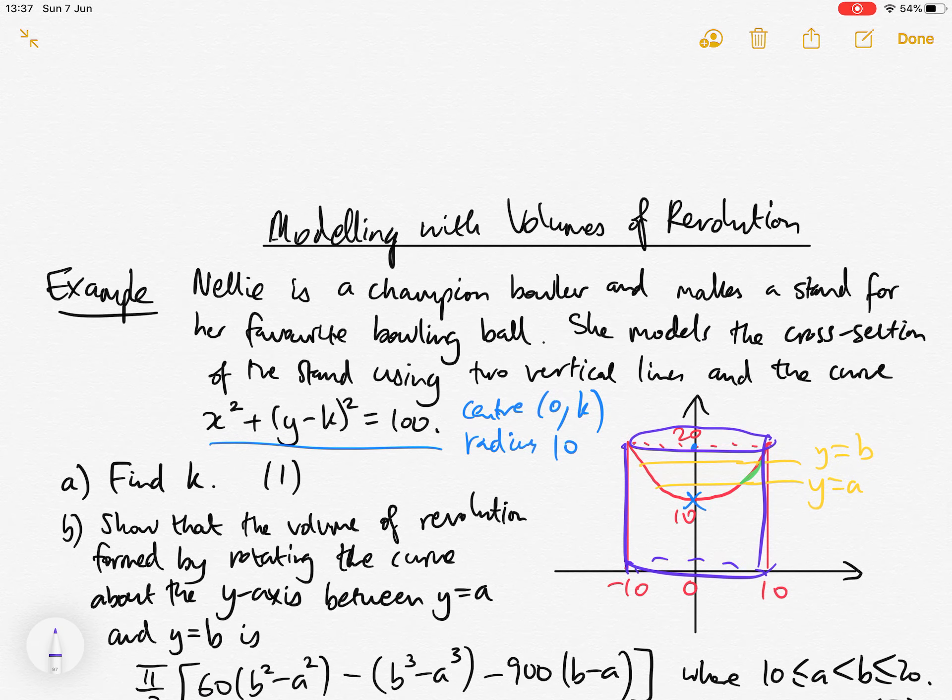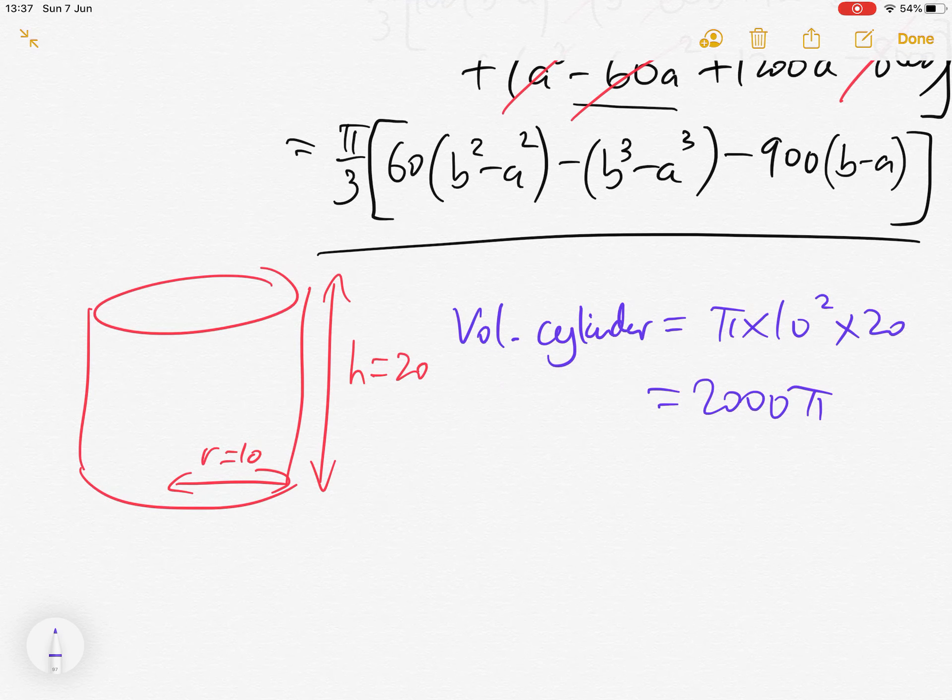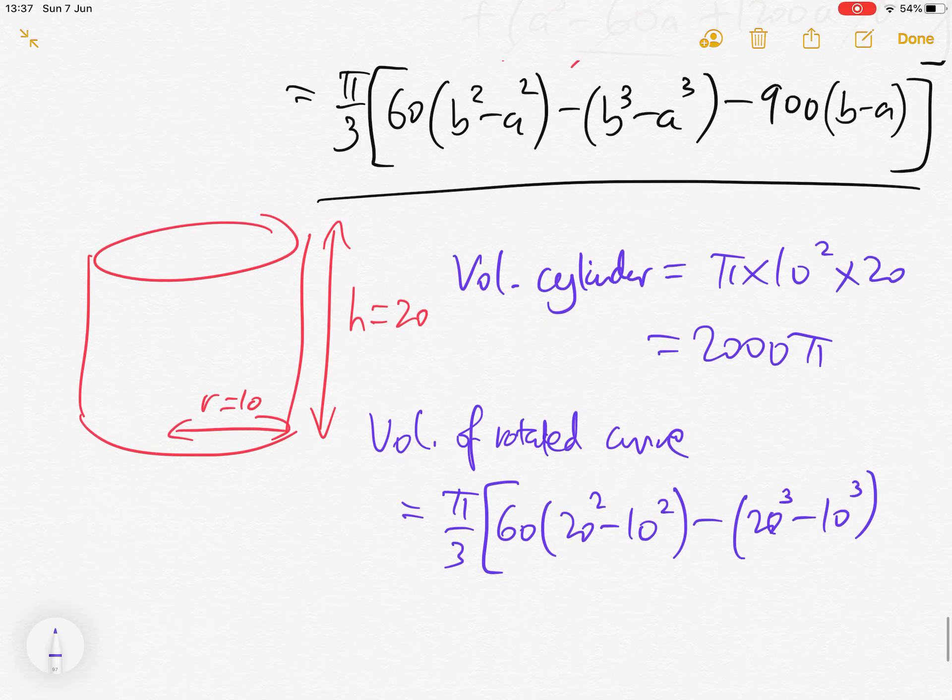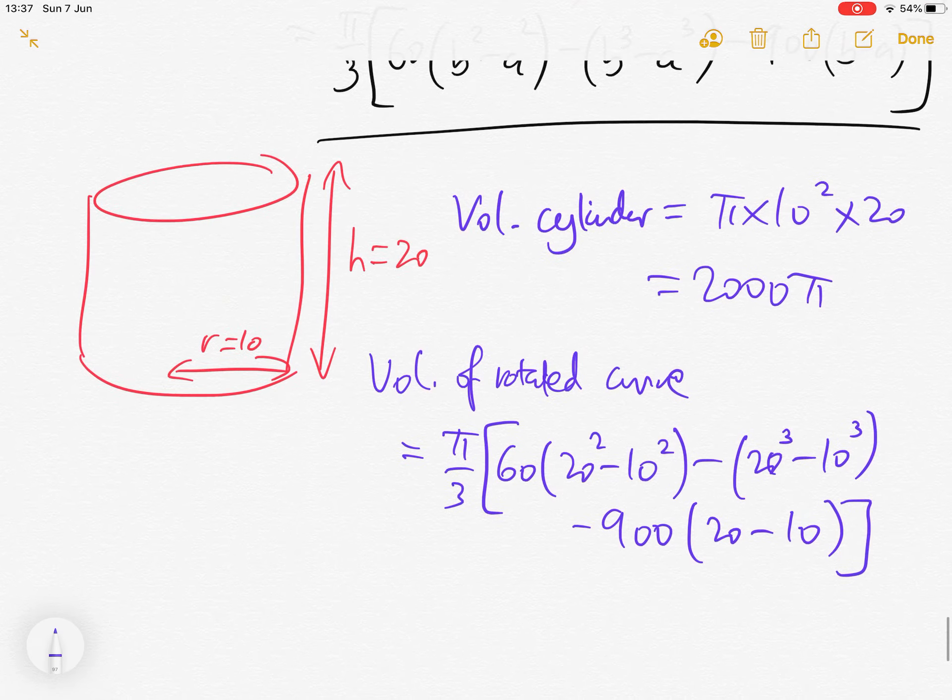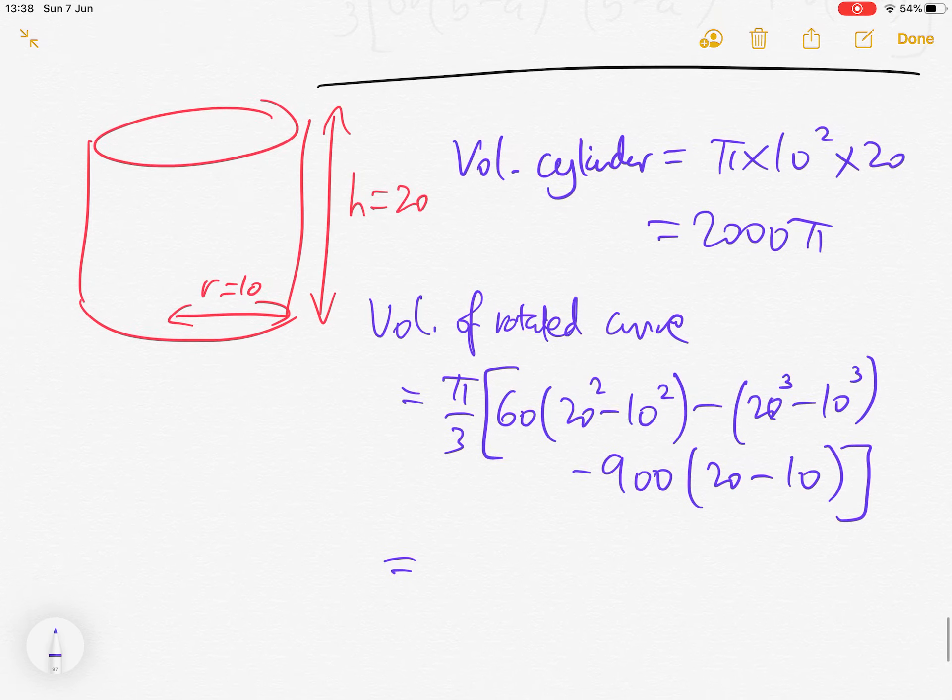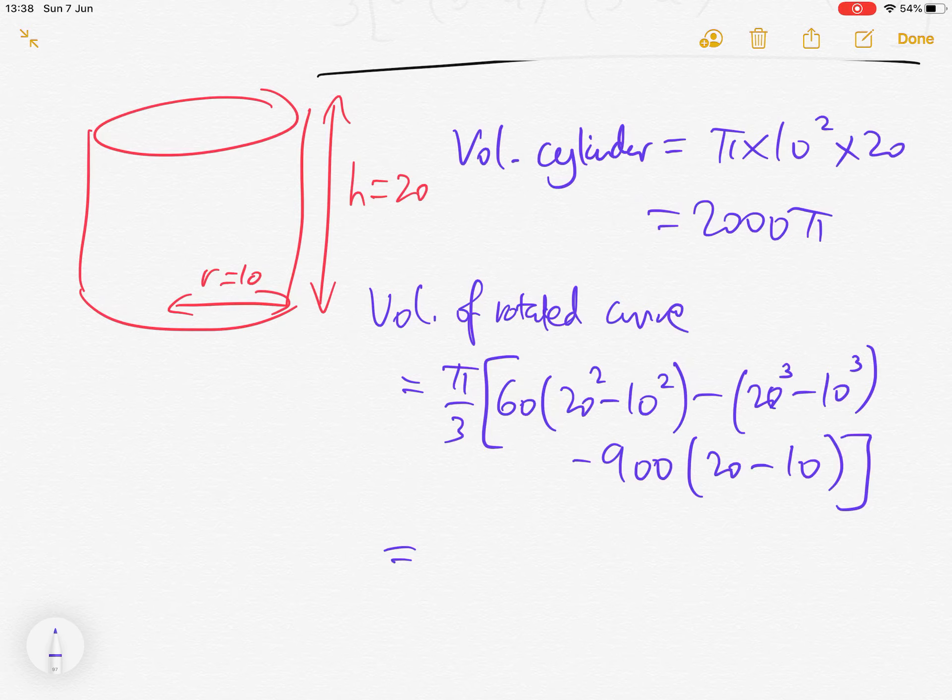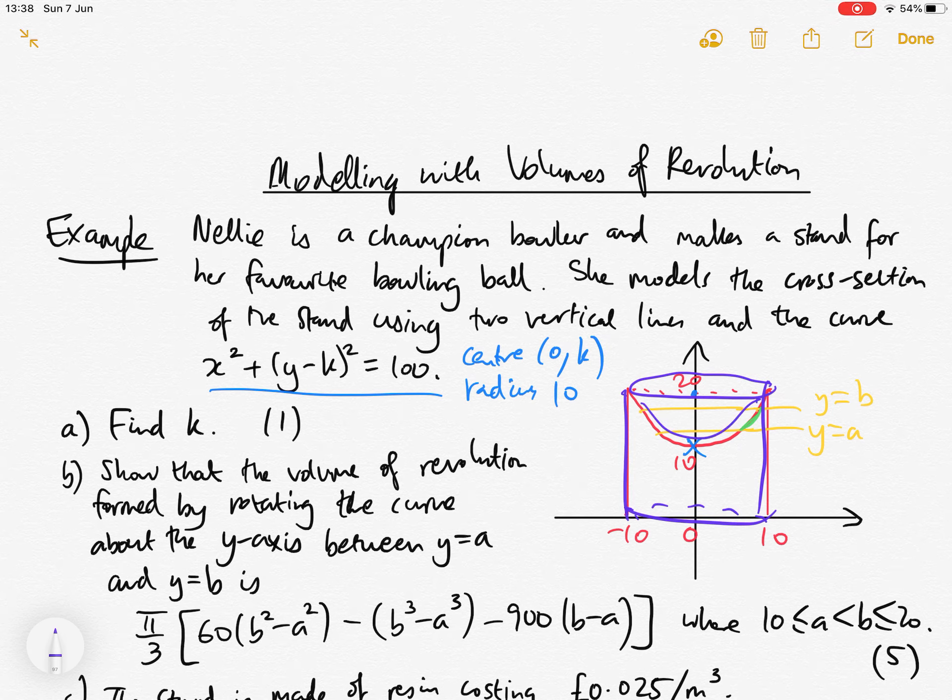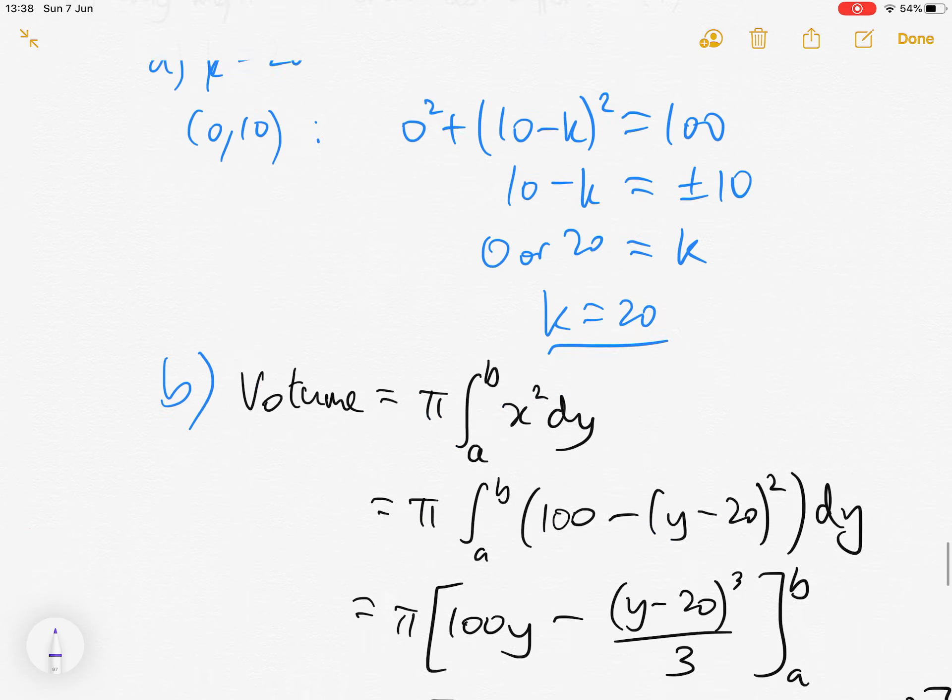The volume of the curve rotated between 10 and 20, we can use our answer to part B. So volume of rotated curve uses this with B is 20 and A is 10. We just need to simplify this, probably easiest now to use a calculator. That gives us 2000 pi over 3.